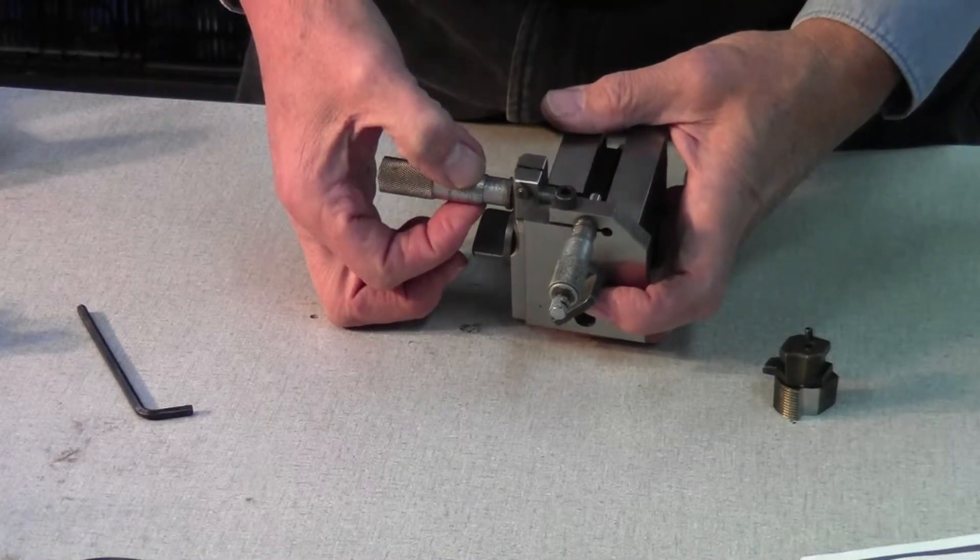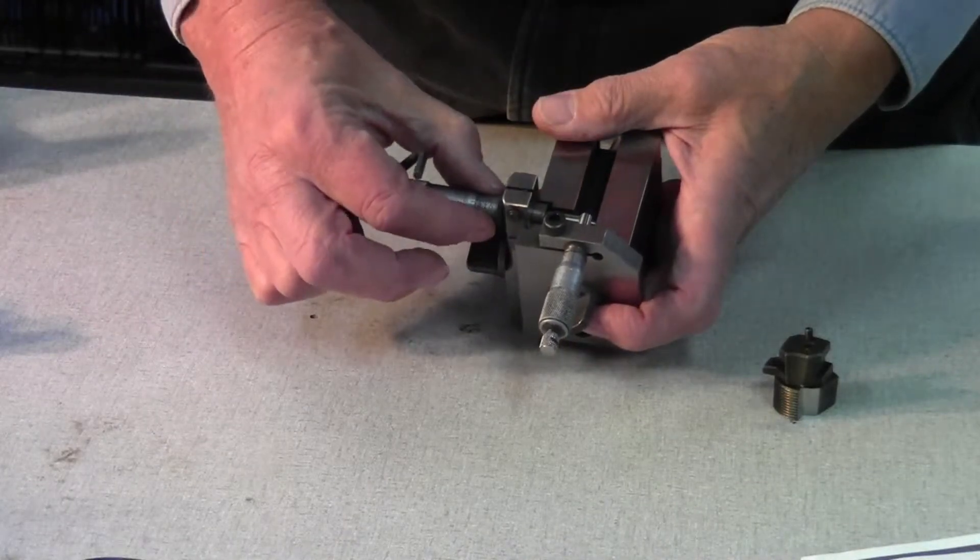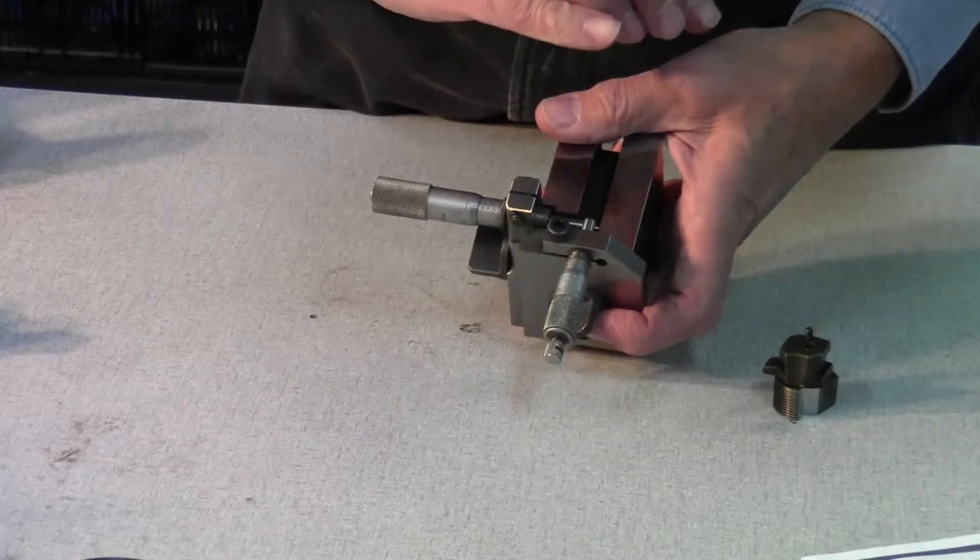I check it. Yes, it is. If it was not, I would loosen the Allen screw here, adjust the barrel on the micrometer in and out until it is correct, and tighten it up.